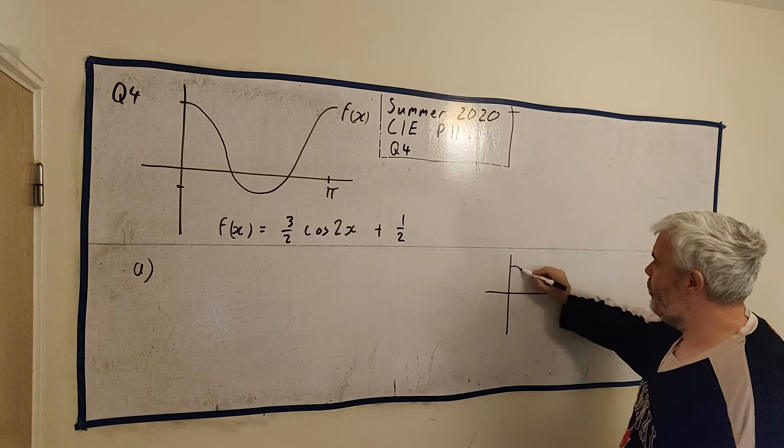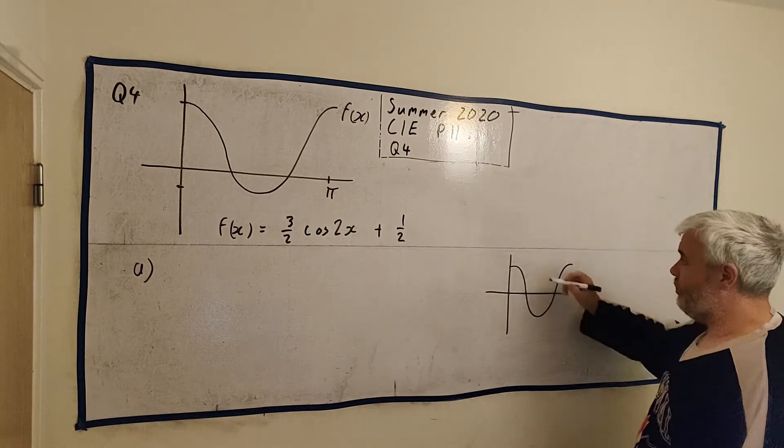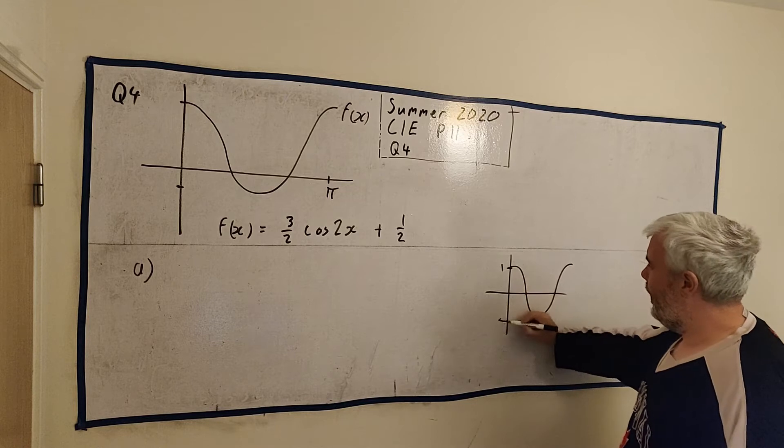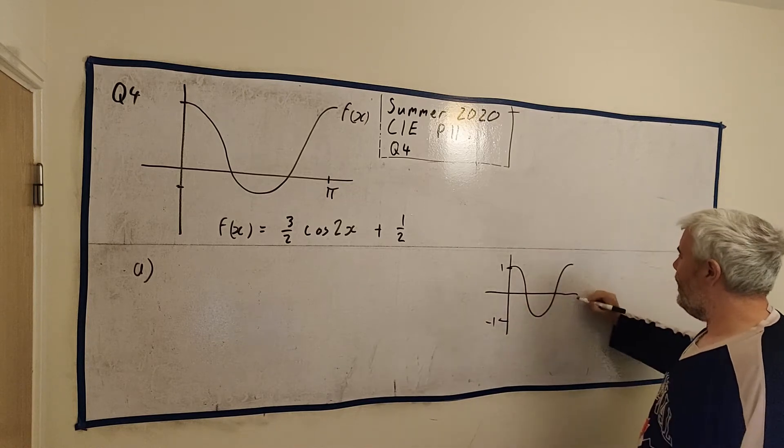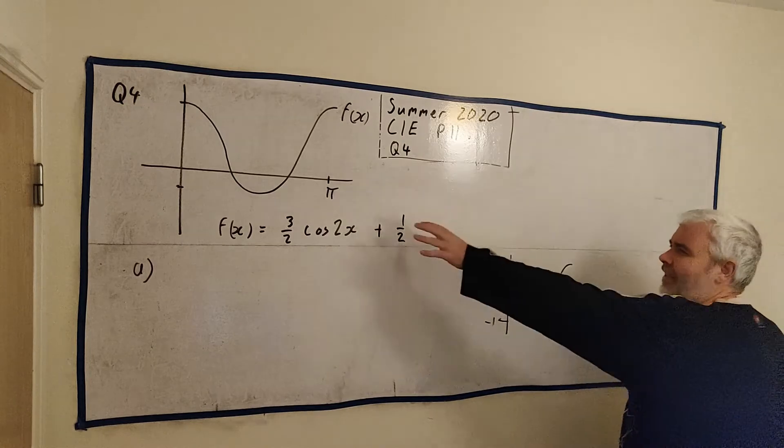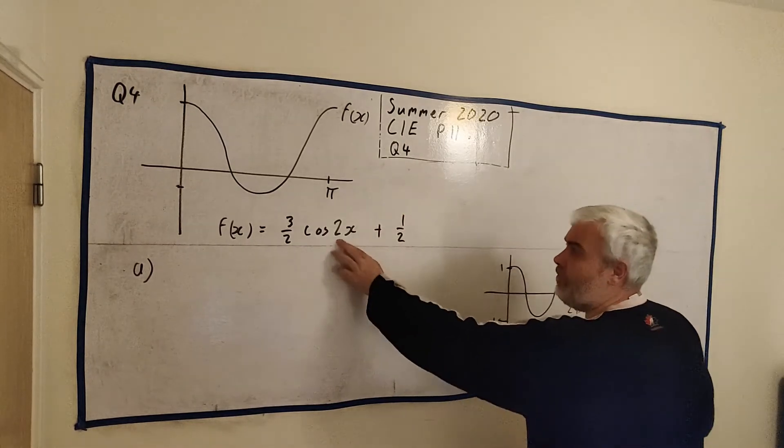So we understand the cosine functions, simple cosine functions, look like this, where this is 1, that is minus 1, and this goes up to 2π.